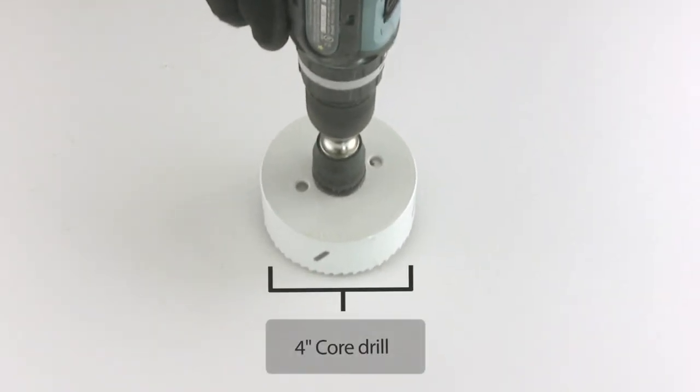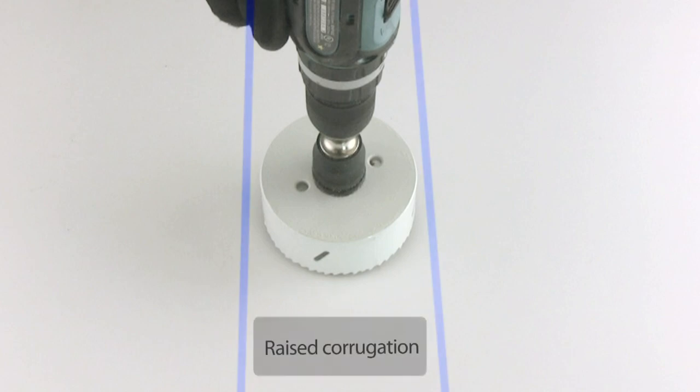Use a 4-inch core drill to cut through the membrane and down into the insulation. Make sure to line up the hole directly above the raised section of the corrugated steel.